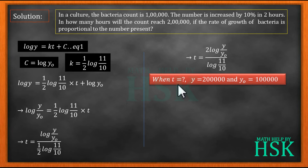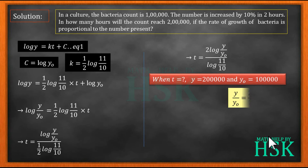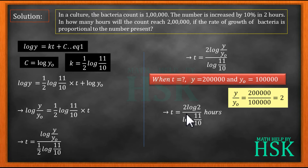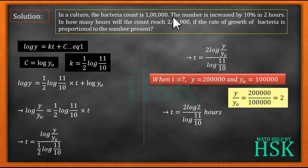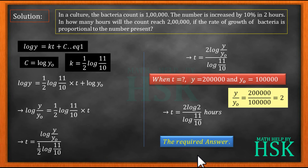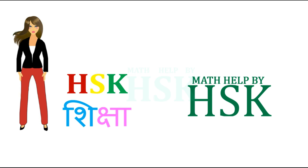Now I need to calculate the time when the initial count of 100,000 becomes 200,000. So y/y₀ = 200,000/100,000 = 2. Placing this in the expression: t = 2·log 2 / log(11/10) hours. This is the time required for the bacteria count to increase from 100,000 to 200,000, and this is the required answer.